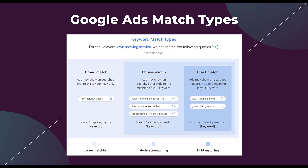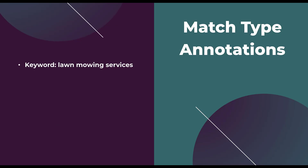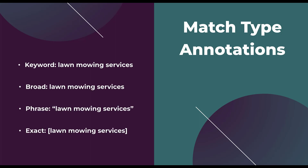First, I want to cover the annotation of the different match types. The keyword from the previous example was lawn mowing services. For each of the different match types, there are different symbols that you use to designate which match type you want Google Ads to use for that keyword. If it's going to be broad match, you just leave it alone — no marks around it. Phrase match uses quotation marks around your entire keyword. Exact match uses brace annotations — an open brace at the beginning and a close brace at the end. Those braces have to be on the very beginning and very end of the keyword; they can't be used throughout the middle to focus on a specific area.